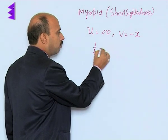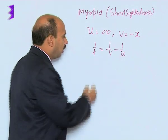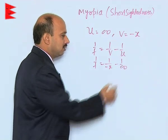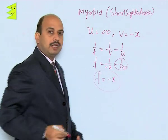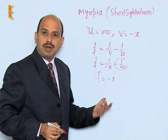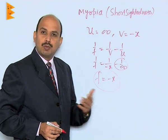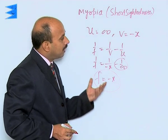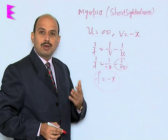We use the lens formula: 1/f = 1/v − 1/u. So 1/f = 1/(−x) − 1/∞, and since 1/∞ = 0, we get f = −x. This means the focal length equals the far point distance with a negative sign. For example, if the far point of the myopic eye is 80 cm, the required focal length is −80 cm. If the far point is 1 meter, the focal length will be −1 meter. By this way, we can calculate the focal length of the required concave lens for correction of the myopic eye.